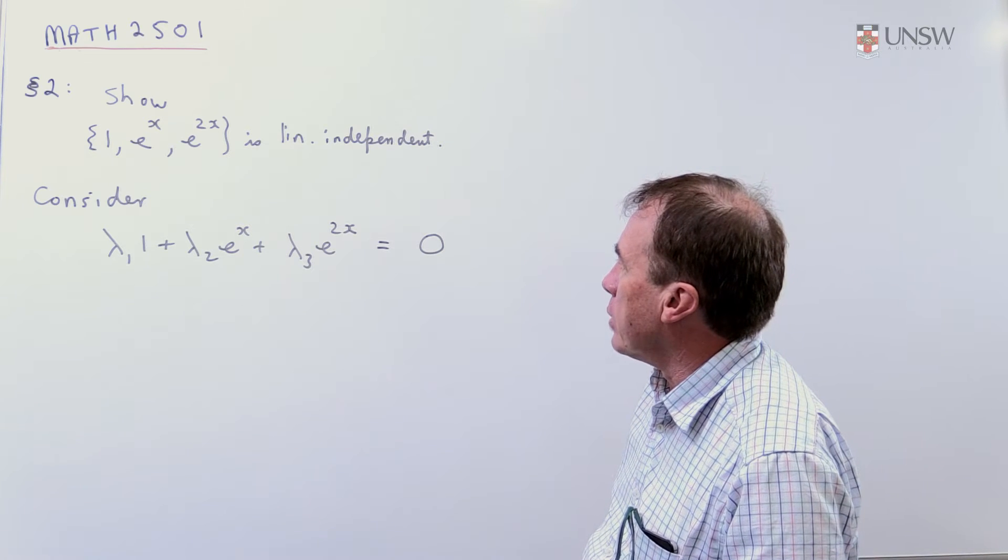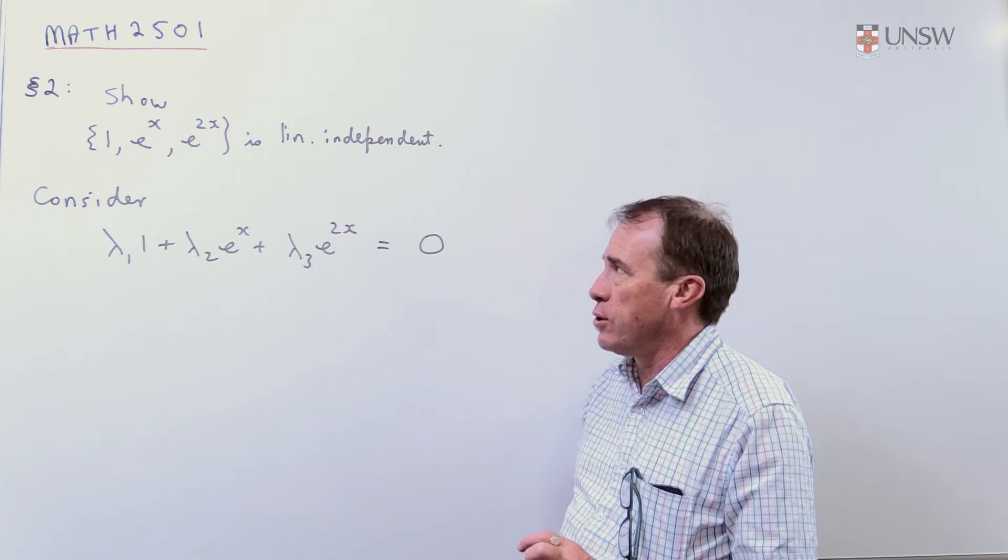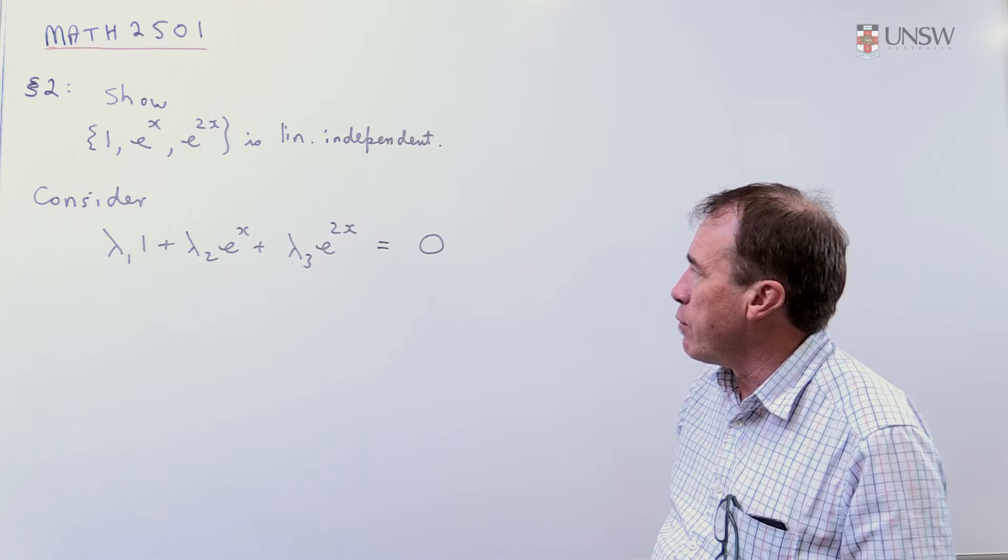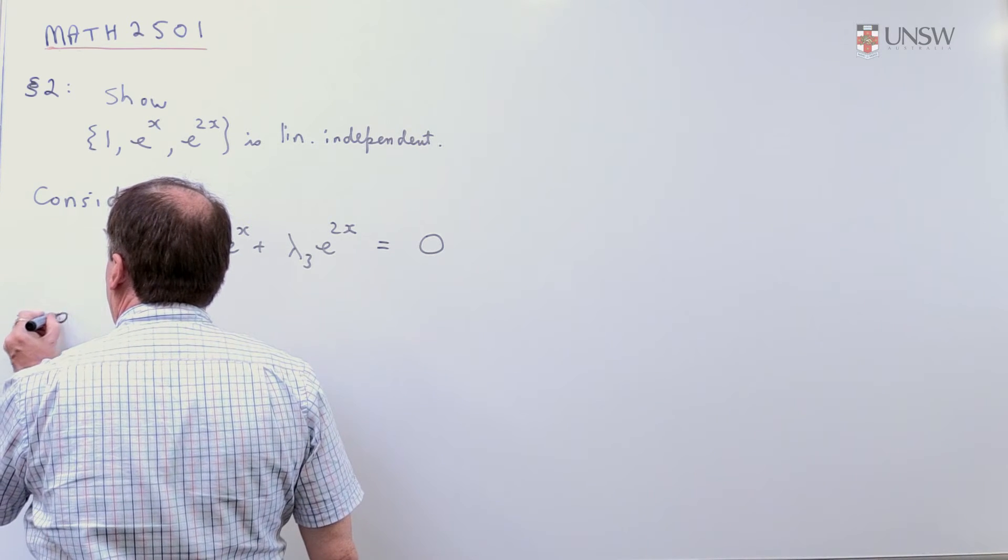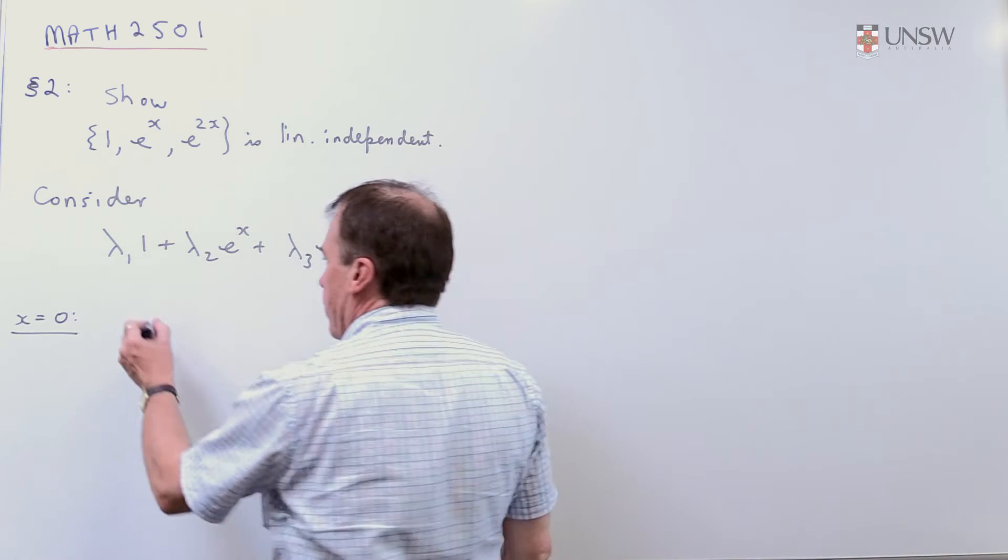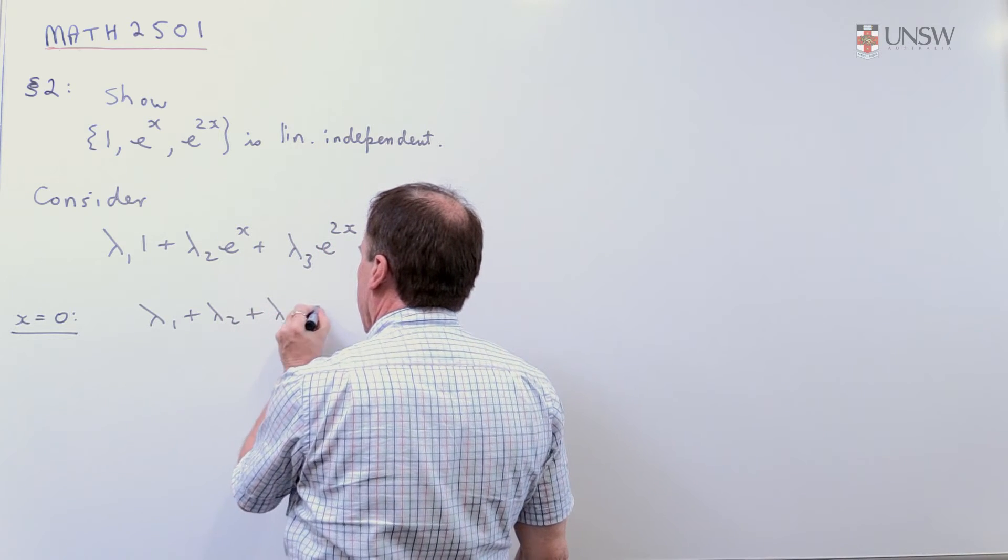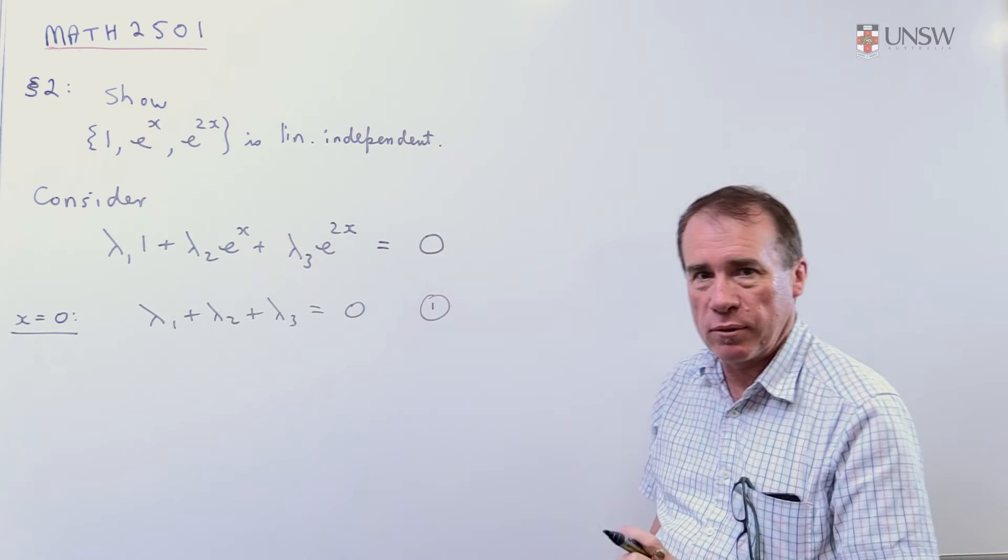And so we want to try and show that all the lambdas turn out to be zero. It gives us the hint, it says do something involving differentiation. Well, probably before I do that, I might just put x equals zero in. If this is true for all x, I might just put x equals zero in and see what that gives me. So that tells me that lambda_1 plus lambda_2 plus lambda_3 is zero. So I'll hang on to that equation, that looks useful.